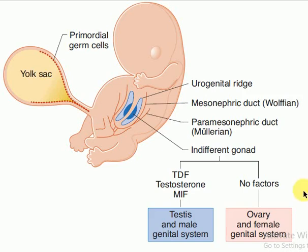So, with all these factors in play, the testes determining factor — which we get from the Y chromosome and the SRY gene — and the testes then producing the testosterone, and the Leydig cells of the testes producing the Müllerian inhibiting factor, we will have the development of a normal male.